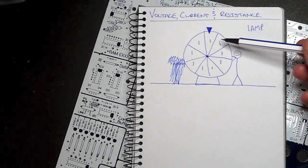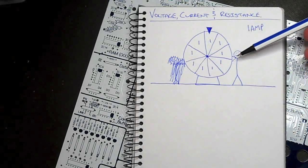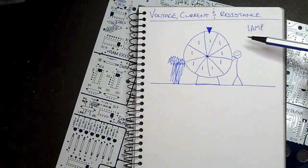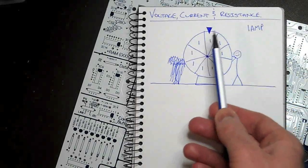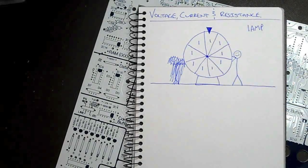So if each one of these segments has one coulomb of charge, and we give this enough force, or so much force as to make this spin, and to have one segment every second passing this little ticker, we would call that one amp.